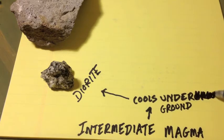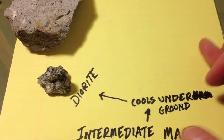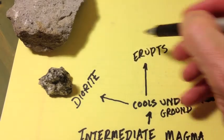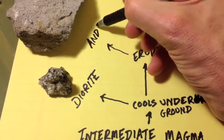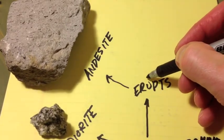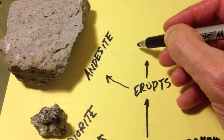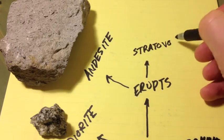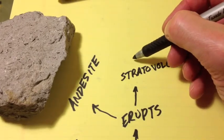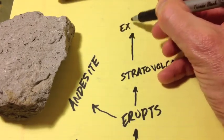When it erupts on the surface, such as at Mt. St. Helens or Pinatubo, you get something like andesite, which is fine-grained. It cools quickly, and it can pile up with ash and pumice to make a stratovolcano.